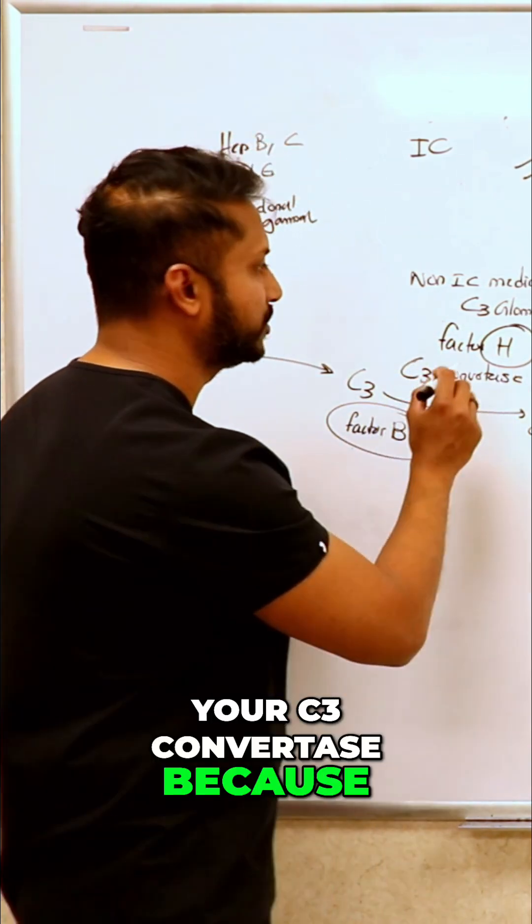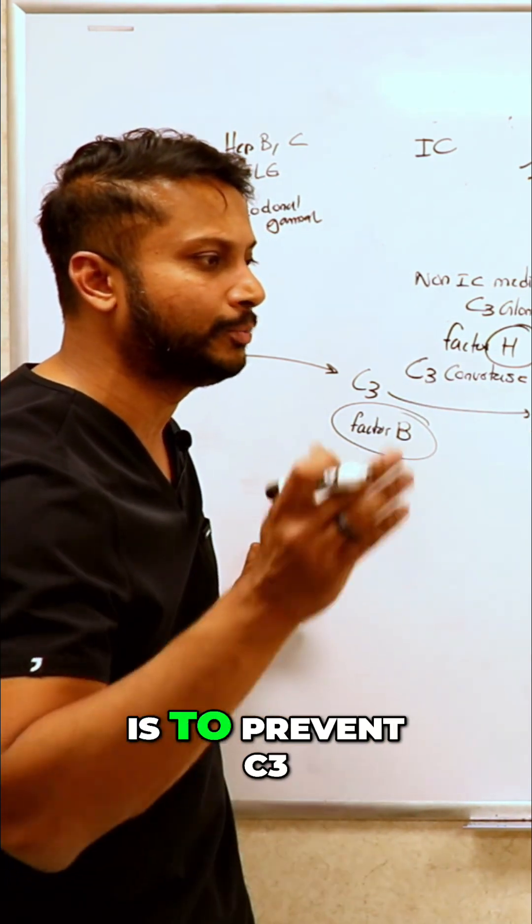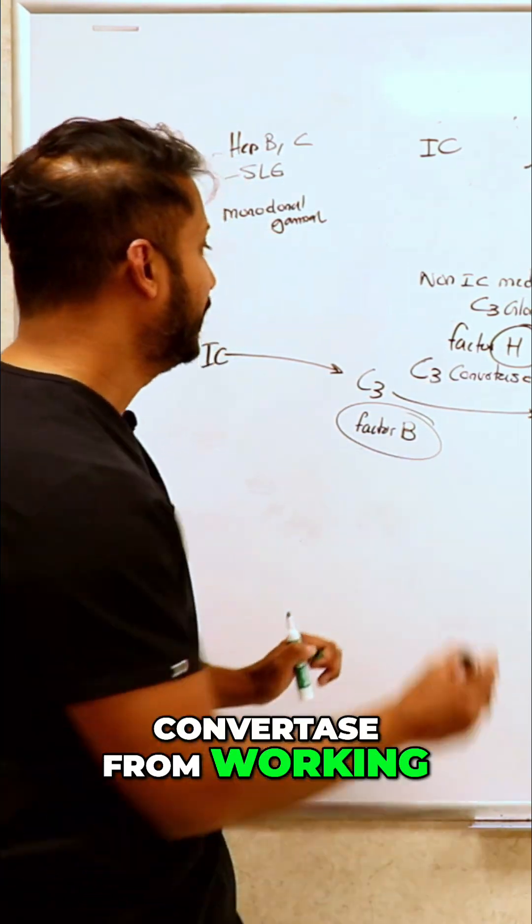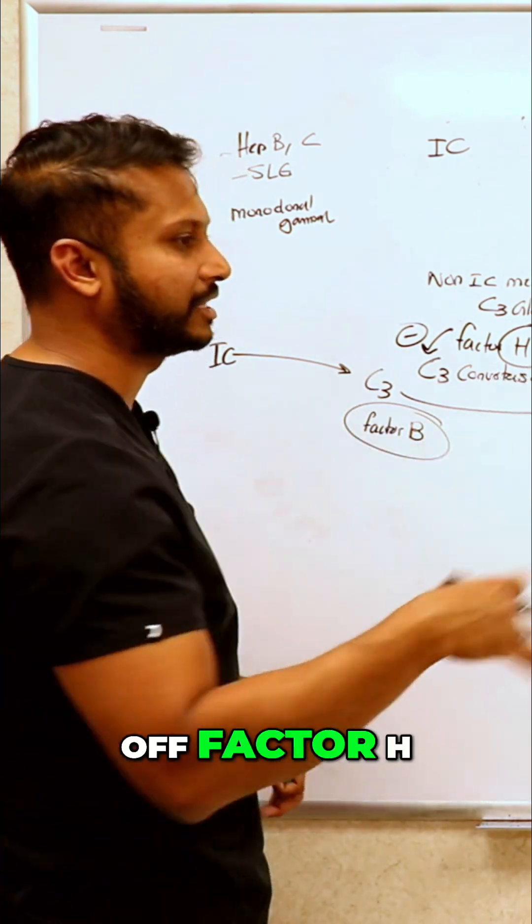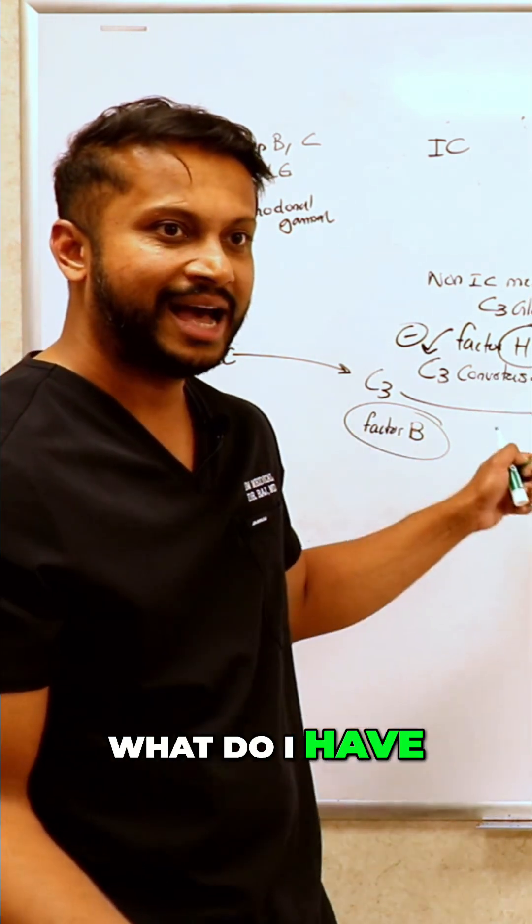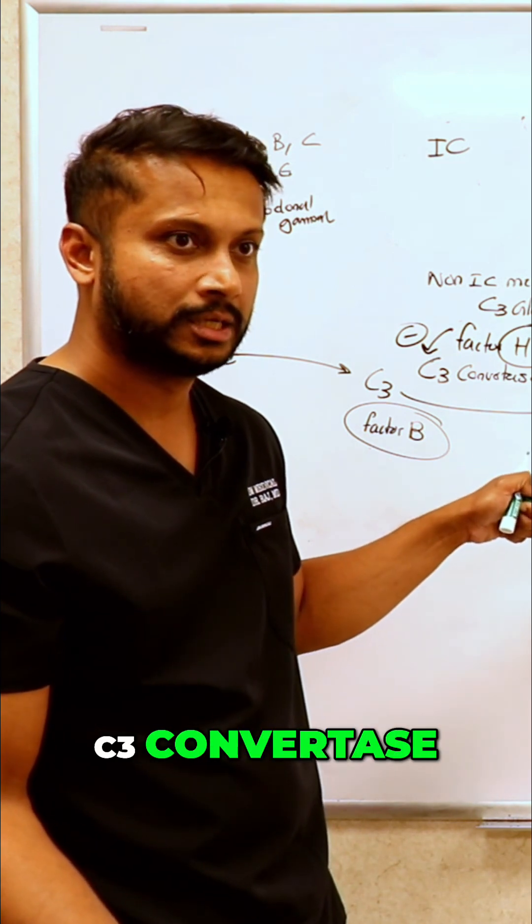Factor H's main job is to prevent C3 converters from working - it inhibits C3 converters. So if I take off factor H, what do I have? I have overactive C3 converters which...